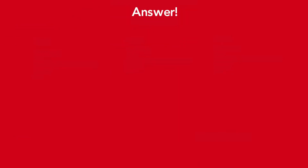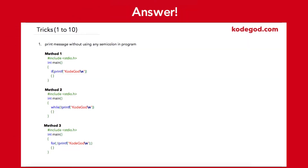Time's up — here is the answer. In this section of trick questions we are going to check a few common questions which are frequently asked in interviews, so that can help you prepare. The first problem is to print a message without using any semicolon in the program. There are three methods using which we can do this.